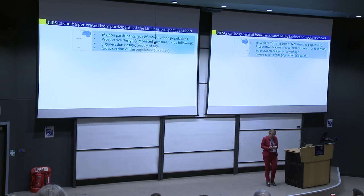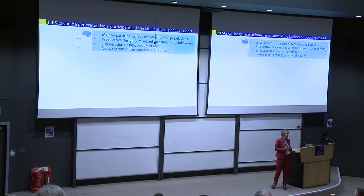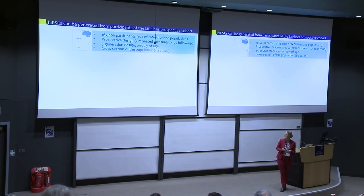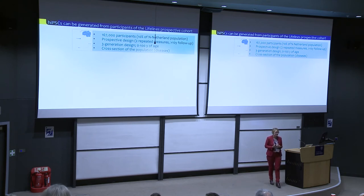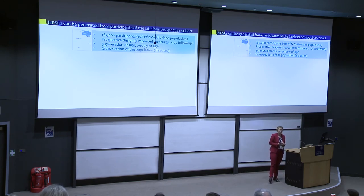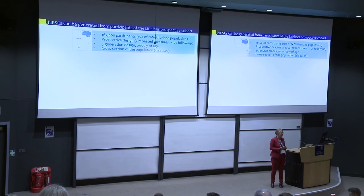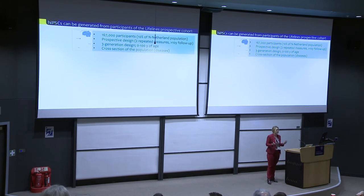For the purpose of this meeting, it's interesting to spend a little time on our biobank, because I think it can provide valuable material for those experiments. We have a biobank in the three northern provinces of the Netherlands. It includes 167,000 participants, which is about 10% of the population of the north of the Netherlands. It's a prospective design — every individual has been seen twice already and we're preparing the third screen, with follow-up for more than ten years. The cohort started in 2006. What is rather unique is that it's a family-based design aimed at three-generation families, with participants ranging from 0 to 100 years of age, representing a cross section of the population.